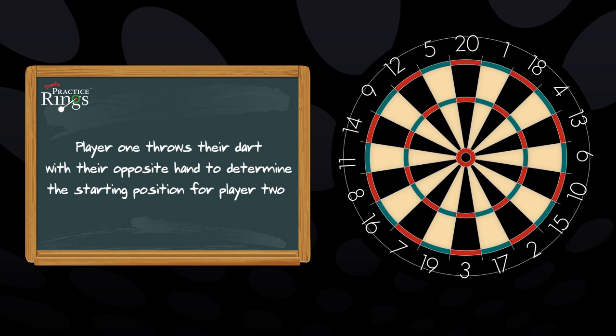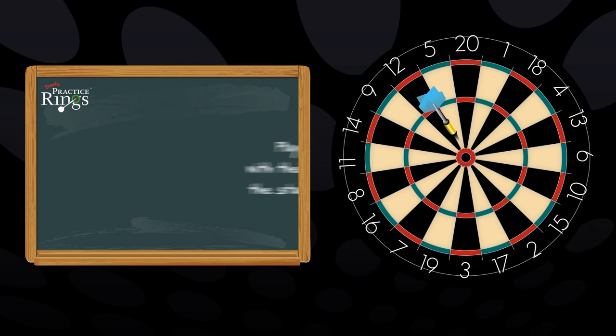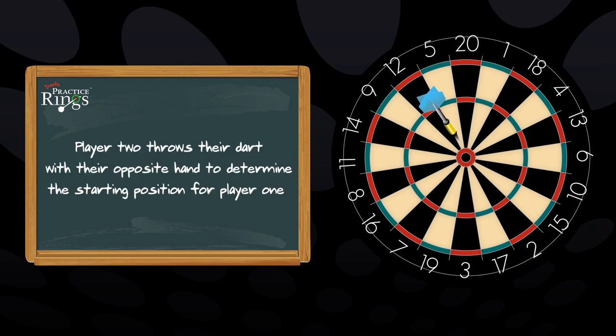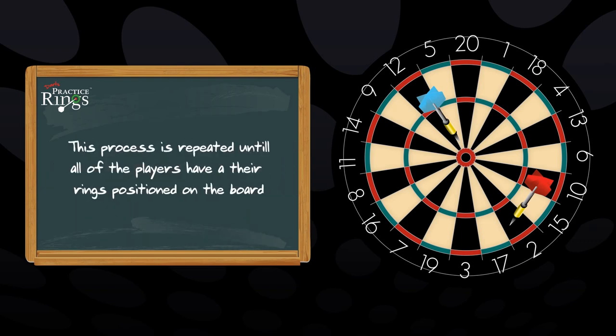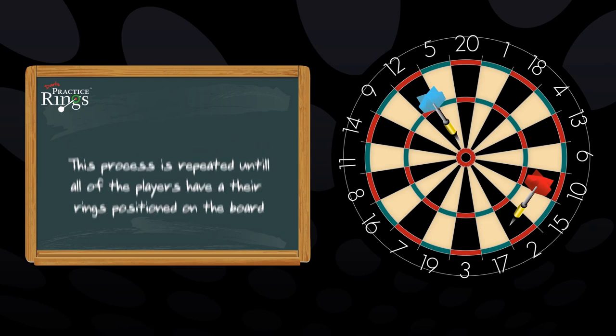To determine who goes first, player 1 throws a dart with their opposite hand to determine the starting point for player 2. Player 2 does the same for player 3's starting point. Player 3 does the same for player 4's starting point, and player 4 will do the same to determine player 1's starting point.